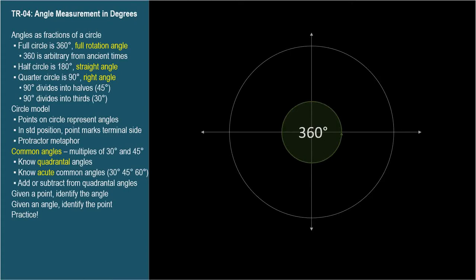Since all the way around a circle is 360 degrees, then halfway around must be 180 degrees, a straight angle as covered in TR-02. Half of that would be 90 degrees, a quarter of the way around a full circle, also called a right angle.